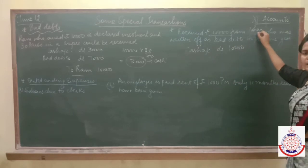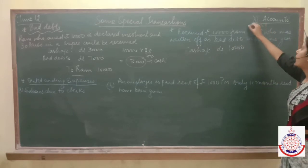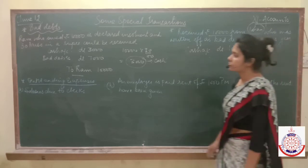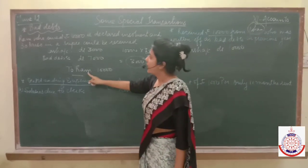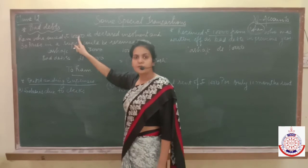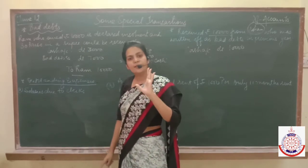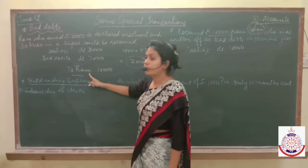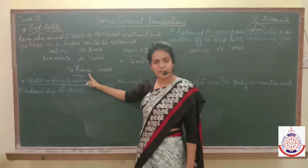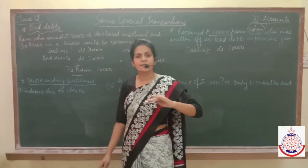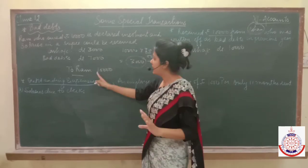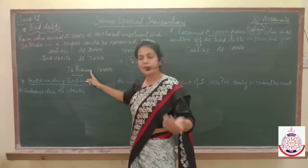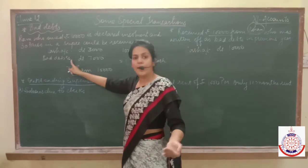He was declared bad debts in the previous year, so we can't use the word Rohan. Just like in Ram's case — Ram was a debtor, so Ram's account must have been debited in our books. When we credit Ram's account in that entry, it means Ram's balance becomes zero in the books. Ram no longer exists as a debtor — rather, we call Ram by the name of bad debts.